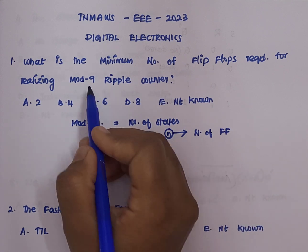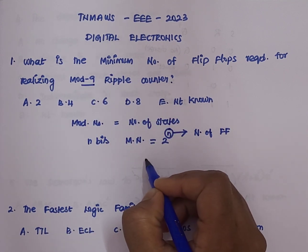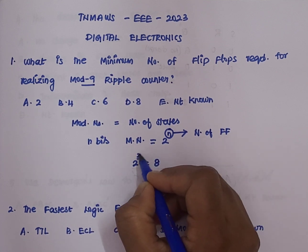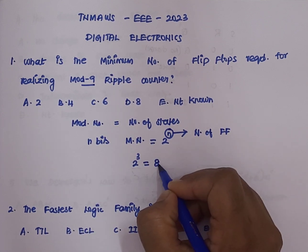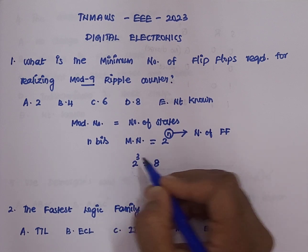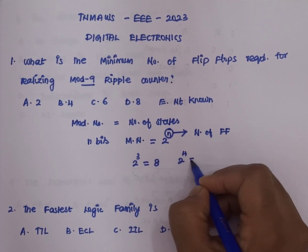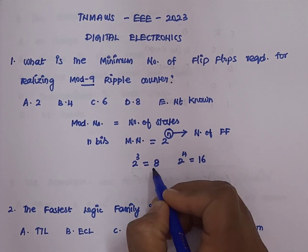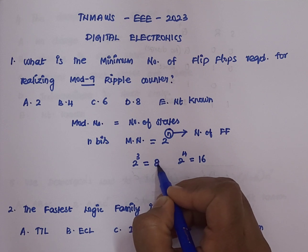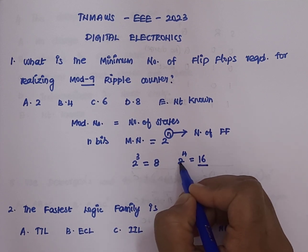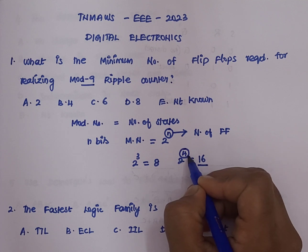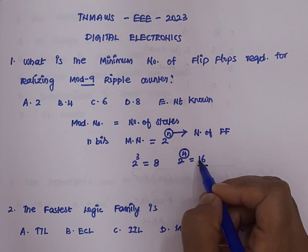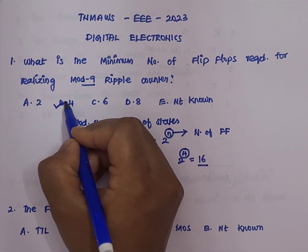In the question they have asked for a mod-9 counter. For 2 power 3, which is equal to 8, we have 3 flip-flops. Since the question asks for mod 9, and 8 is less than 9, we raise to 2 power 4 which becomes 16. So the minimum number of flip-flops required is 4. From the given options, 4 belongs to option B, which is the correct answer.